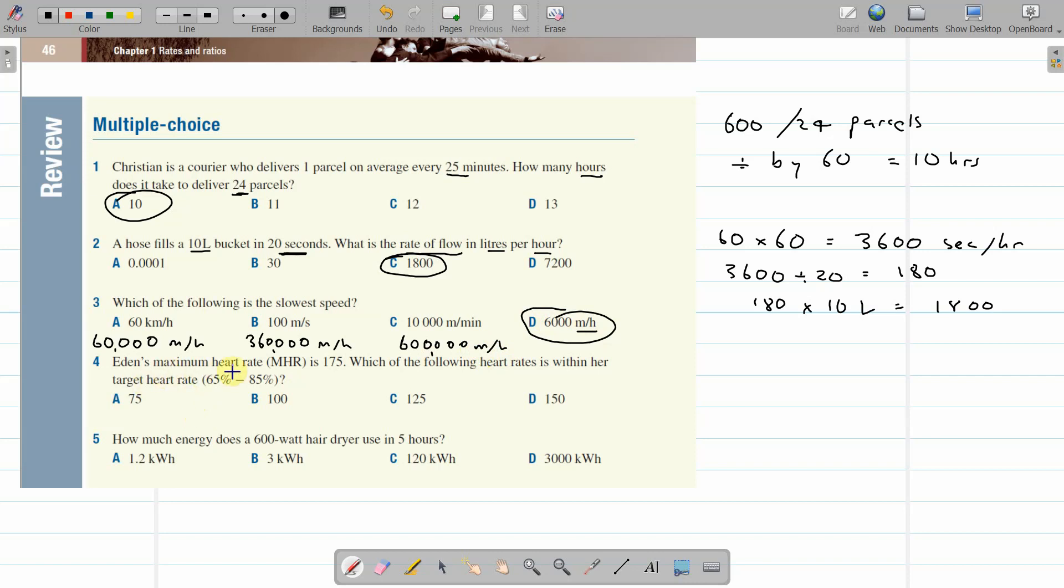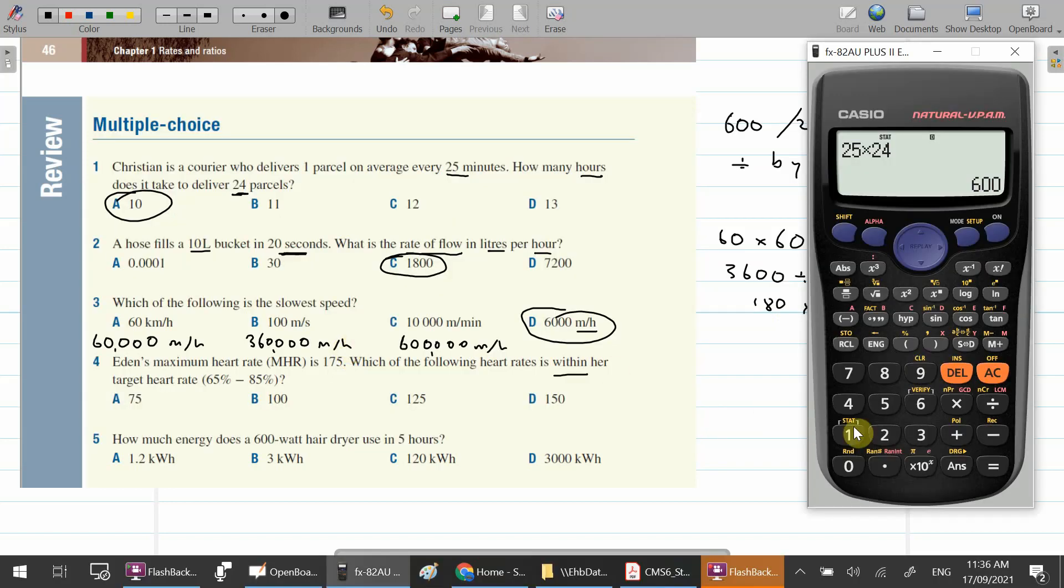Eden's maximum heart rate is 175 beats per minute. Which of the following heart rates is within her target heart rate of 65 to 85%? So I'm going to use the calculator again. Find out 65% of this will be the lower end. So that's the lower end, 113, which rules out those two. So it's up to these two.